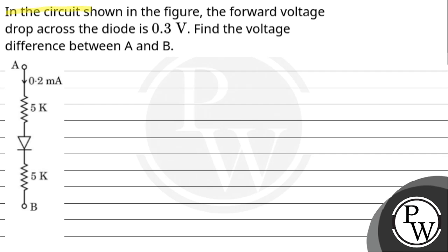Let's read the question. In the circuit shown in the figure, the forward voltage drop across the diode is 0.3 volts. Find the voltage difference between A and B.